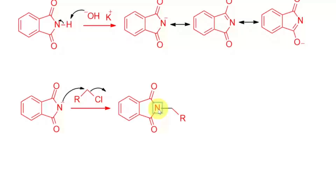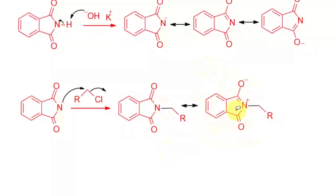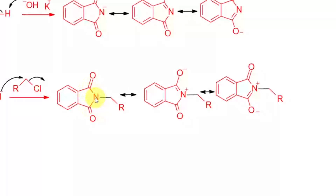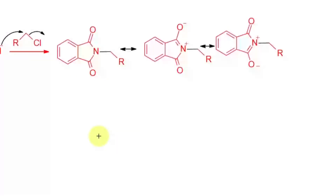The resulting N-alkylimide will not react with another molecule of alkyl halide, because the lone pair on nitrogen is involved in resonance with the carbonyl groups. Three resonance structures are possible, meaning this lone pair is not available for nucleophilic attack on another alkyl halide. This nitrogen reacts with only one alkyl halide — that is the speciality of this reaction.